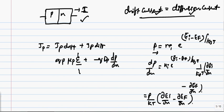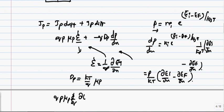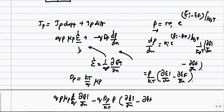Let us keep this in mind and see what E is. We define the electric field E as 1 over Q times ∂EI/∂X. Now if you substitute this E equation back and the dP by dX equation into the JP expression, and we know the Einstein relation for D_P is KT over Q times mu_P, substituting these equations, we will get an equation: mu_P times P times E, with 1 over Q times ∂EI/∂X, minus Q times D_P over KT times P times (∂EI/∂X minus ∂EF/∂X).